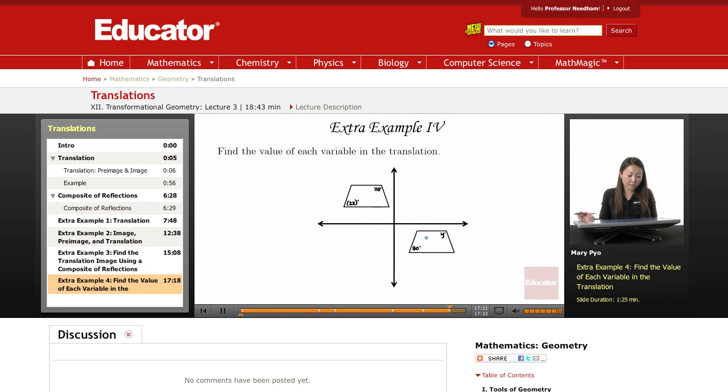Okay, in the fourth example, find the value of each variable in the translation. So here we have one of these is the pre-image, and one of them is the image, the translated image.